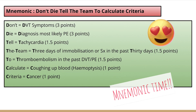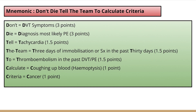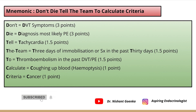The mnemonic is: 'Don't Die, Tell The Team To Calculate The Criteria.' We all know pulmonary embolism is a dreadful condition and mortality is very high, but we don't want the patient to die. How we can save the patient is by calculating the criteria beforehand to predict the risk, so we tell the team to calculate it.